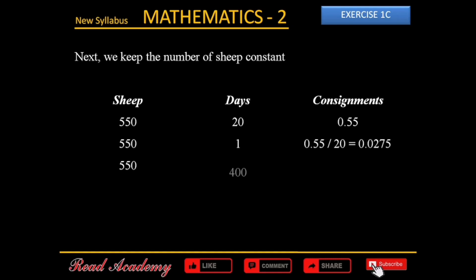Now to find out the number of consignments needed for 400 days, we are going to multiply 0.0275 by 400, and the answer is 11. So, 11 consignments of fodder are needed to feed 550 sheep for 400 days.